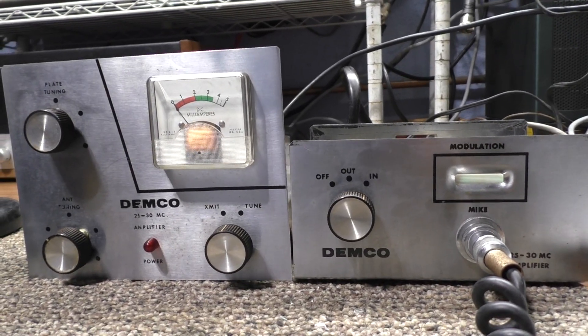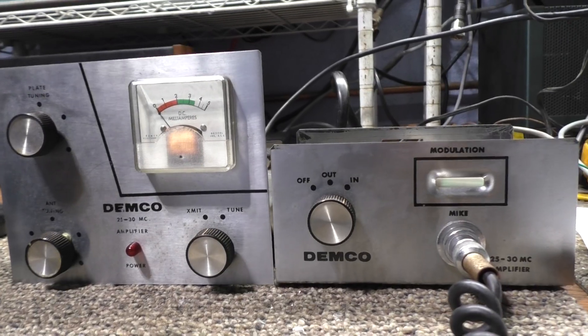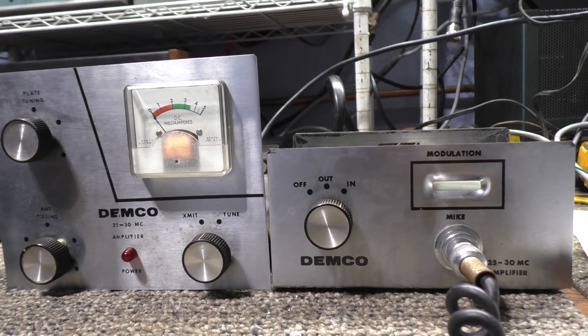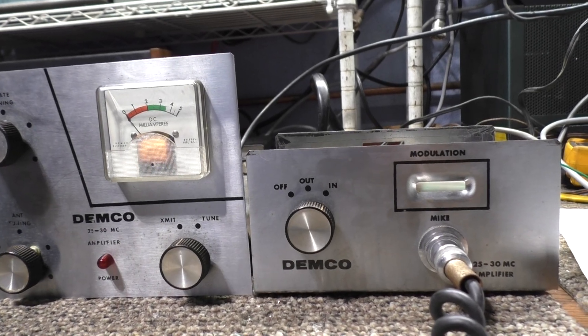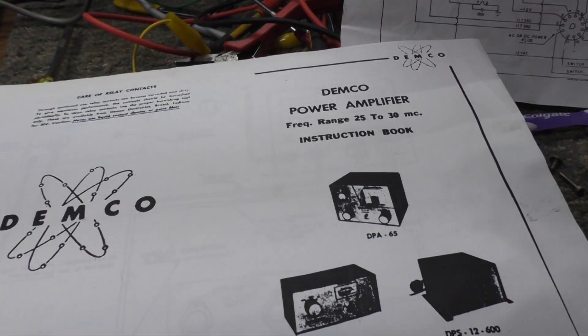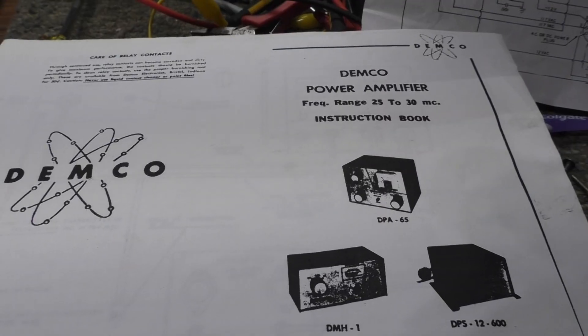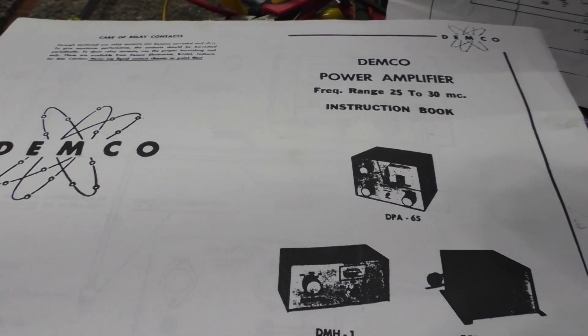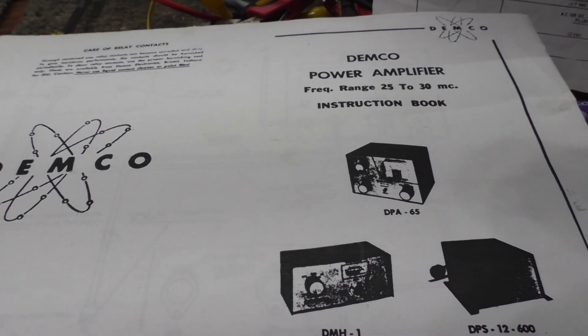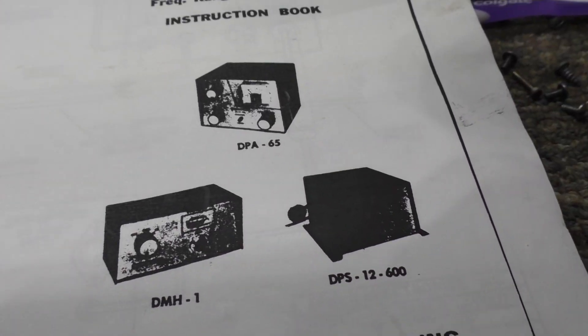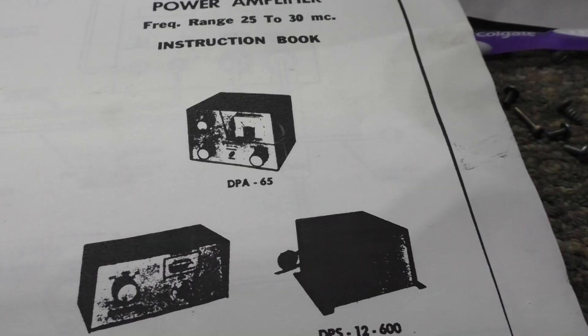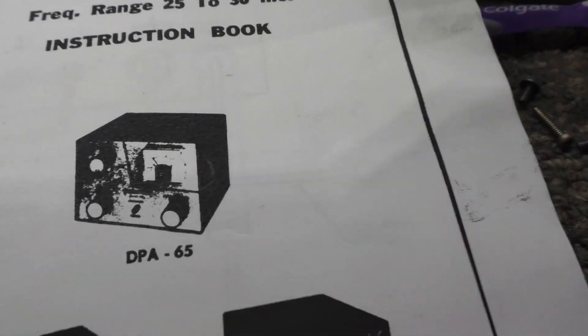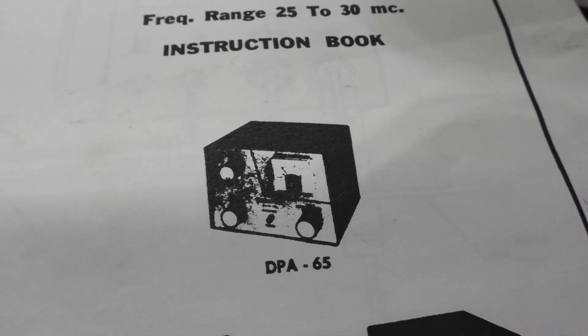It's a two-piece modulator and it's called the DPA 65. Here is the first page of the manual, Xerox manual I made quite a few years ago on this amplifier. I didn't make it, I found it and copied it.